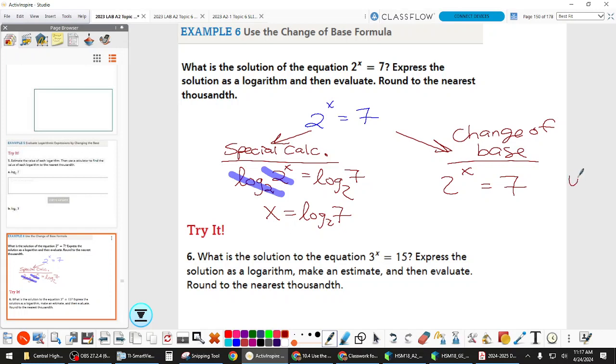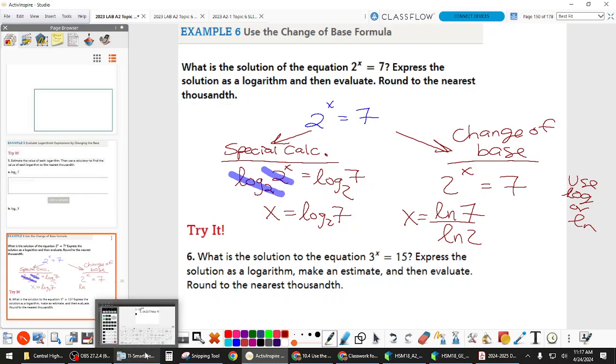So, instead, we can use either log, just common log, or natural log. It actually makes no difference at all. So, you pick which one you like better. And then, for that, we're going to do, on this side, natural log of seven, over natural log of two, to solve for x. So, let me show you that that is the same. Again, I don't know how you feel about this, but for me, it feels kind of slow.